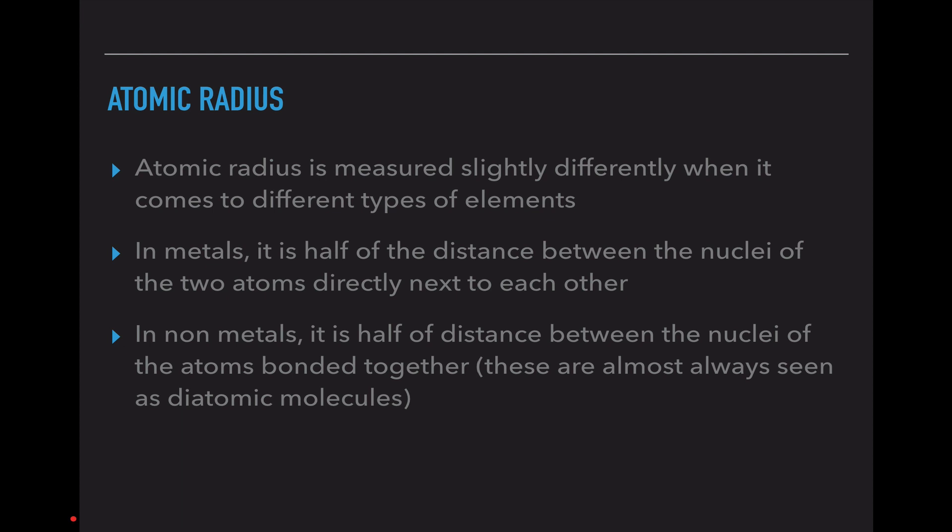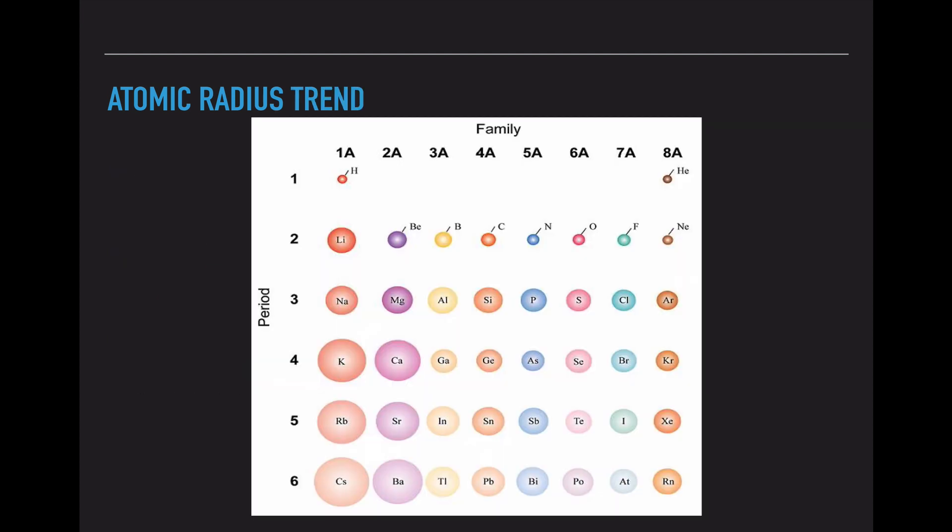Atomic radius is the next trend. The radius is measured slightly differently when it comes to different types of elements. In metals, it's half the distance between two nuclei of atoms directly next to each other. So, if you have a nucleus and a nucleus, you measure this distance and you divide it by two. In nonmetals, it is half the distance between the nuclei of the atoms bonded together. So, when you have Cl2, you have one Cl and a second Cl, and it's this distance divided by two. So, the distance divided by two is the same idea, but in nonmetals, they are bonded. They are sharing electrons and they have already created a bond. In metals, they're just sitting next to each other. So, looking at this photo, we can see some of the ideas of the atomic radius.